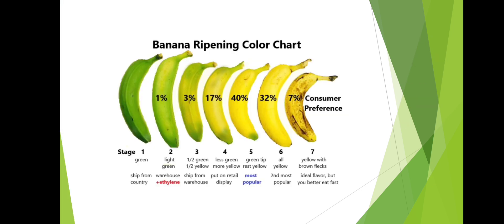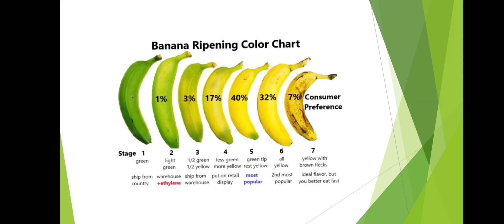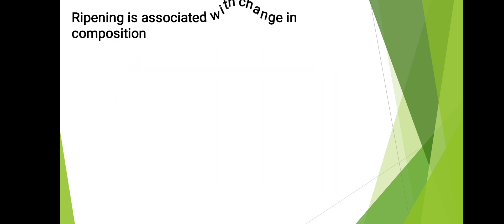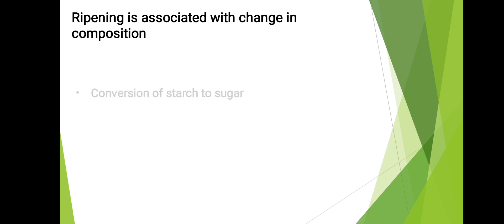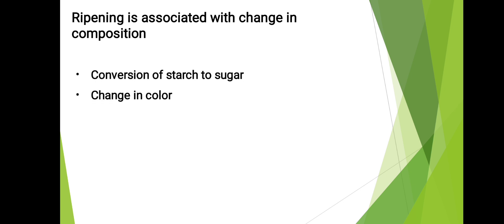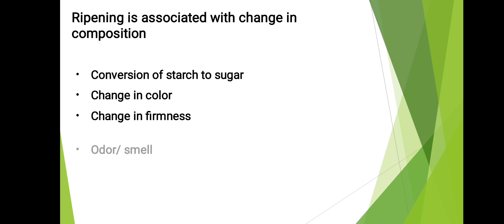Ripening is associated with changes in composition, including conversion of starch to sugar, change in color, change in firmness, and odor or smell — as illustrated by the Banana Ripening Color Chart.